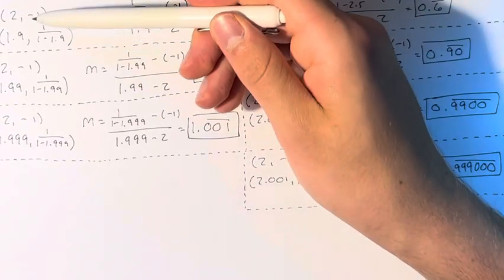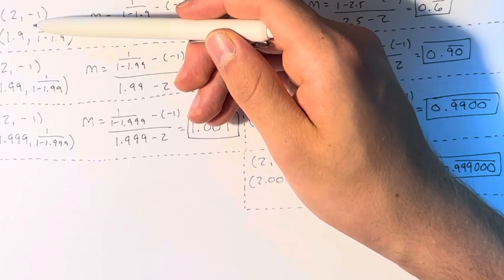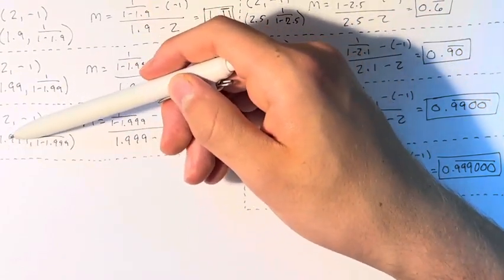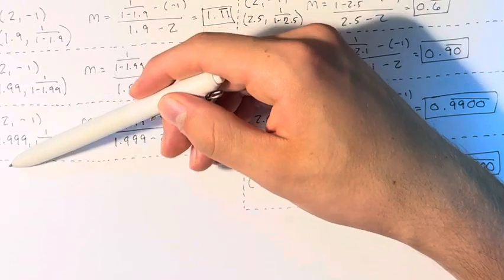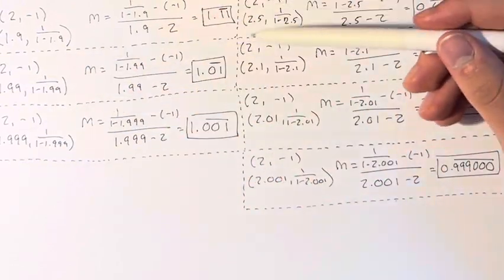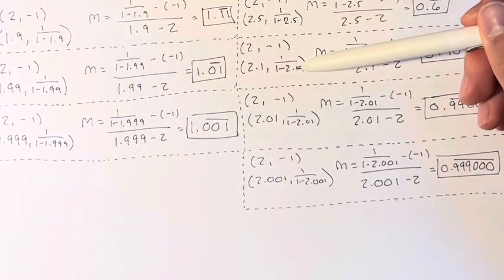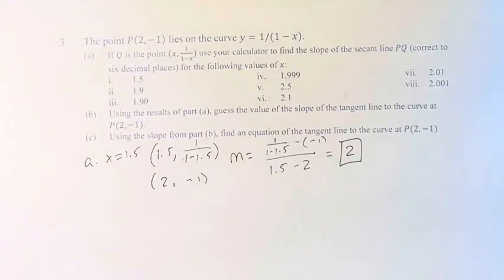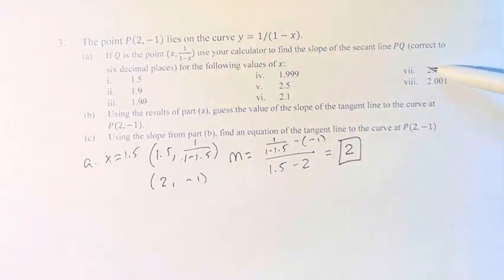And what we can see is these are the values that are getting closer and closer to 2 from below, so 1.9 to 1.99 to 1.999. And here it's from above, so 2.5 to 2.1 to 2.01 to 2.001. You can notice that these values are all getting closer and closer to 2.